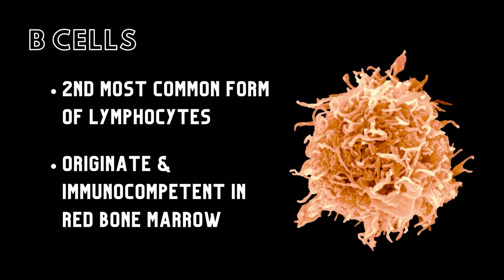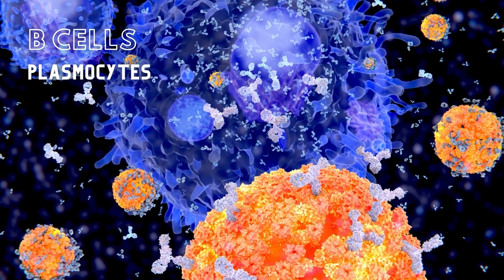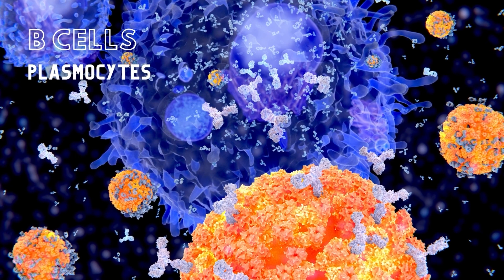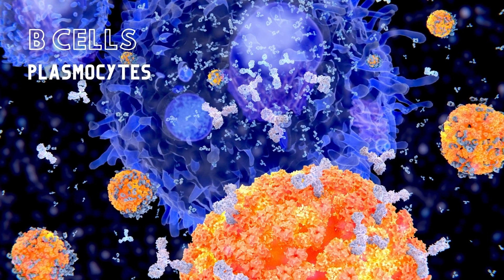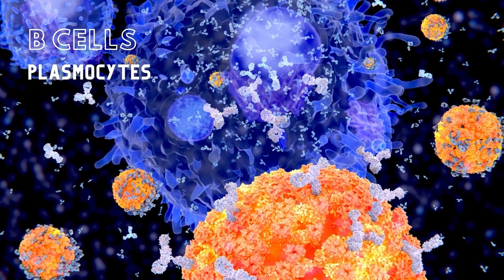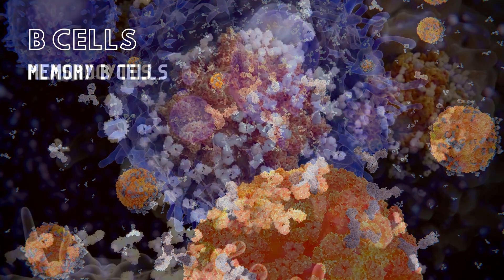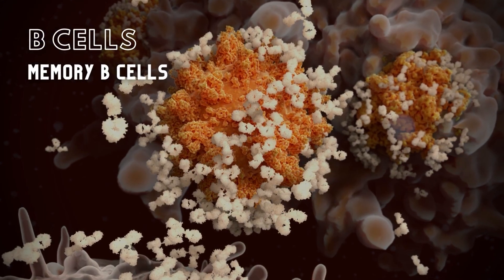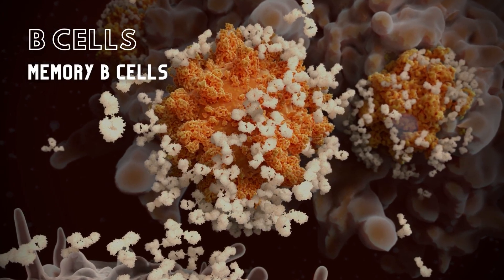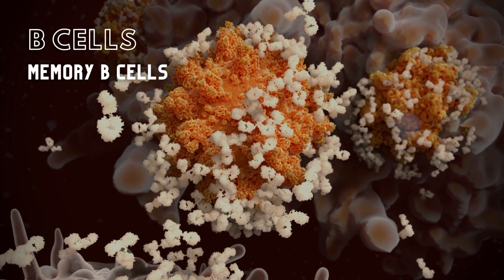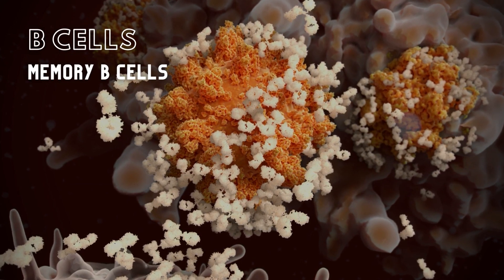B cells are the second most common form of lymphocytes. These originate and become immunocompetent within the red bone marrow. Immunocompetent B cells divide and differentiate into either plasma cells, known as plasmacytes, which secrete antibodies, or they become memory B cells. Memory B cells become activated only if the antigen appears again in the body at a later date.